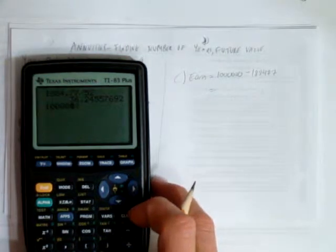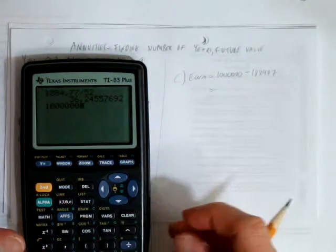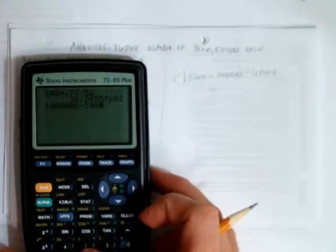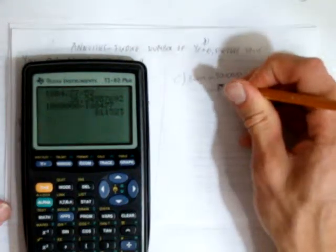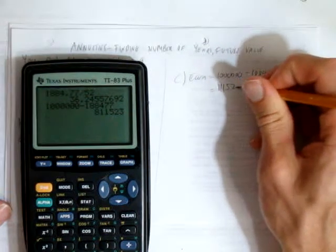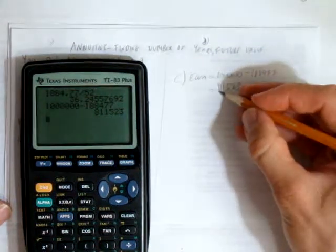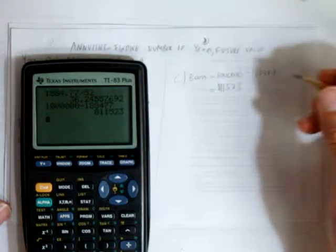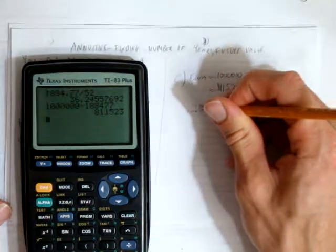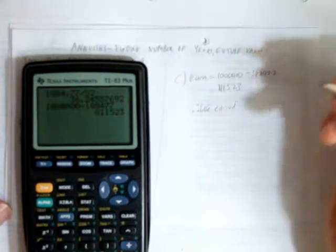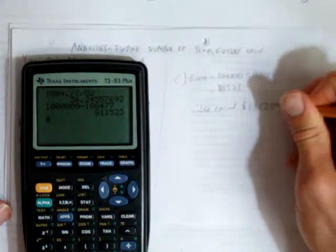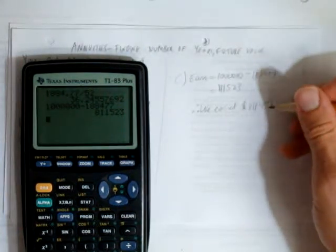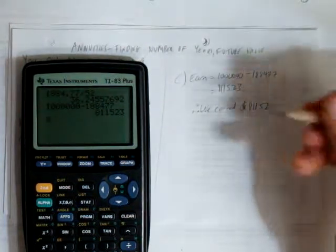A million bucks, make sure you got six zeros there, there they are, minus $188,000, maybe you could do that in your head without the calculator. You get $811,523, therefore we earned or you earned $811,523. That's amazing, right? That's why it's so good to save money, so start saving now.